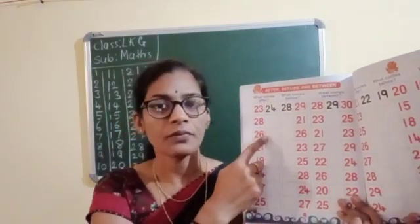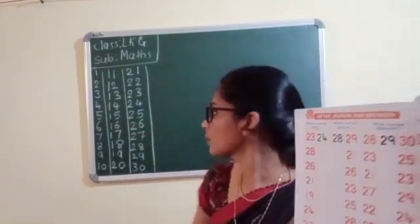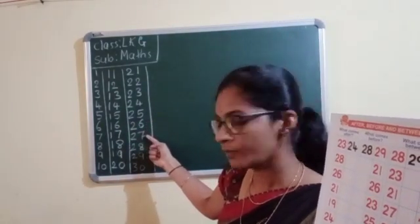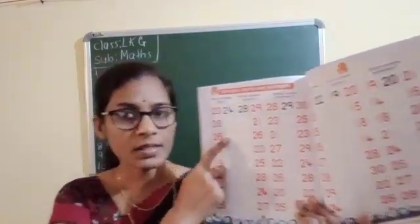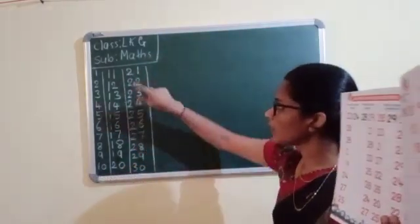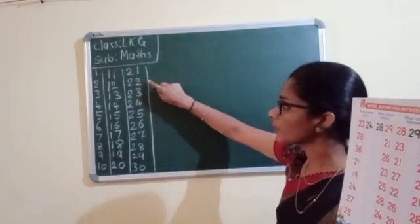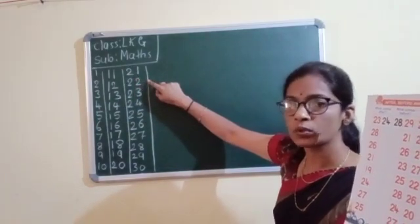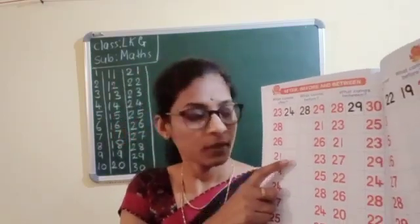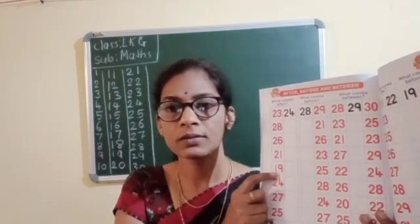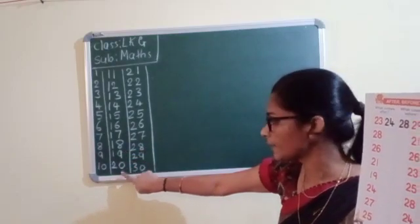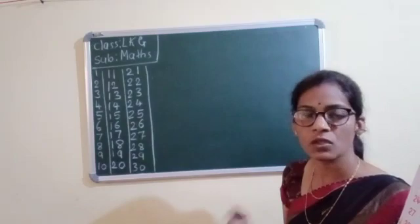And 26 after? Look at here, 26 is here — 26 after is 27. You should write here: 27. And 21 after what children? Where is 21? Here is 21 — 21 after is 22. You should write: 22. And 19 after what? Where is 19? 19 after is 20. You should write 20. This is called after number.